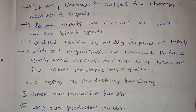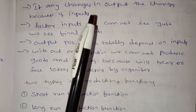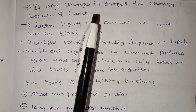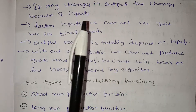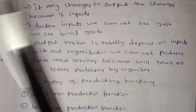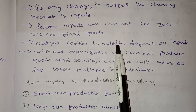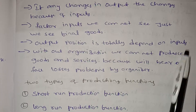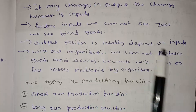What we need to find is final goods. We need to find land, labor, organizer, and capital. Output position totally depends on input — input includes labor, land, and capital.